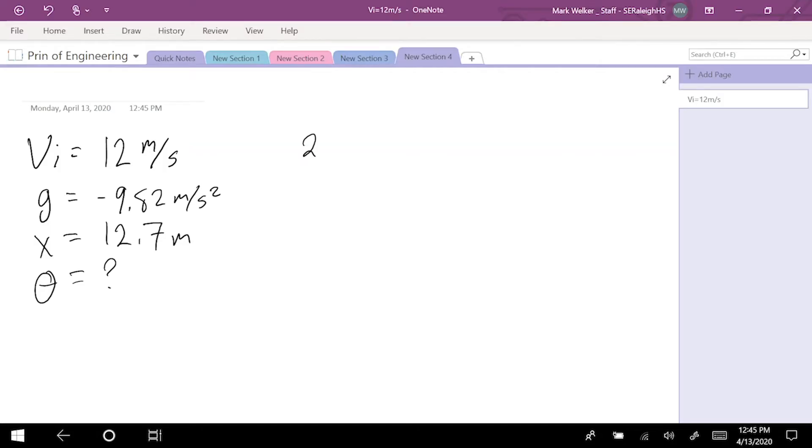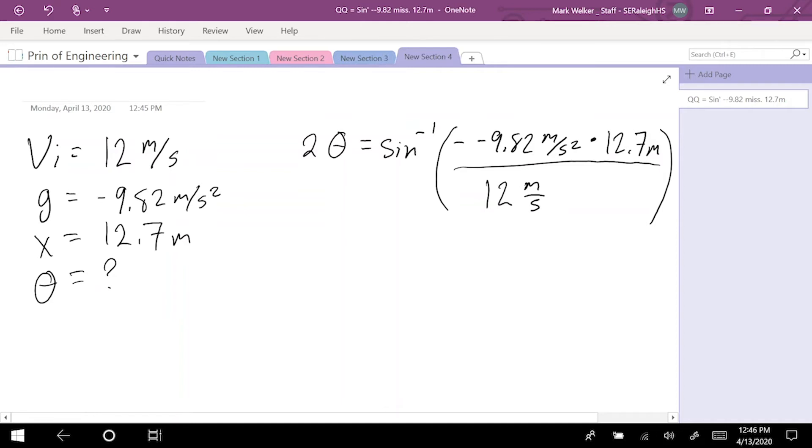So, 2 times theta equals sine negative 1, the arc sine, of negative 9.82 meters per second squared times x. So we know that's 12.7 meters, all of that is going to be over velocity squared, which is 12 meters per second, and all of that is getting squared. So, simplifying it down a little bit.